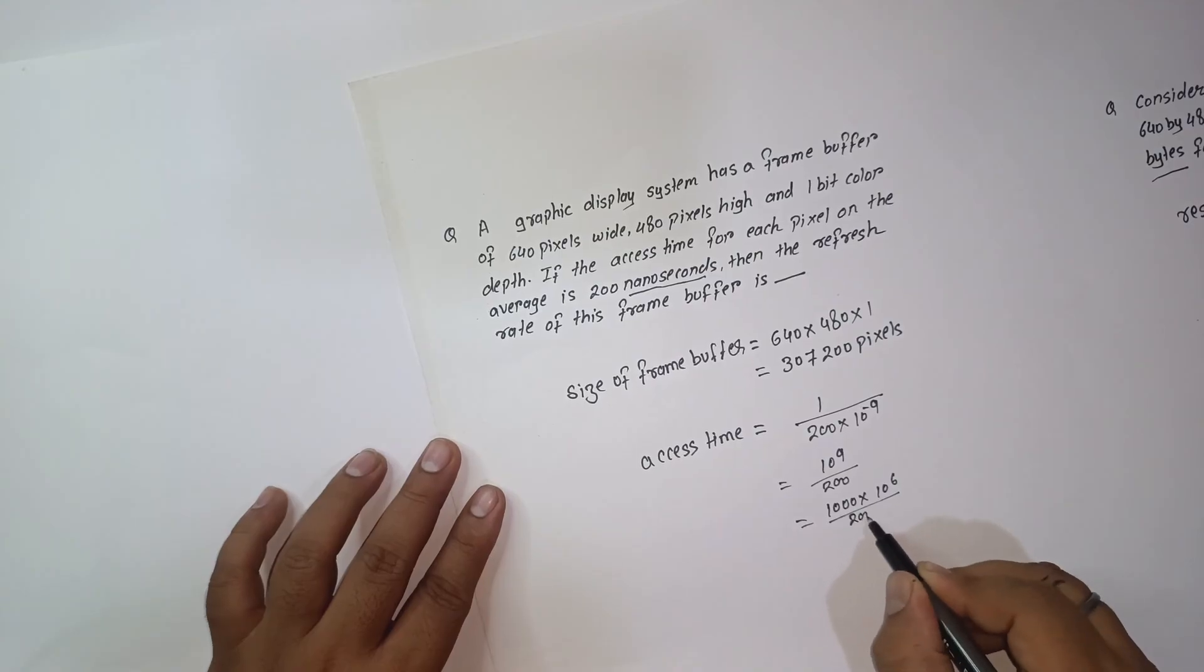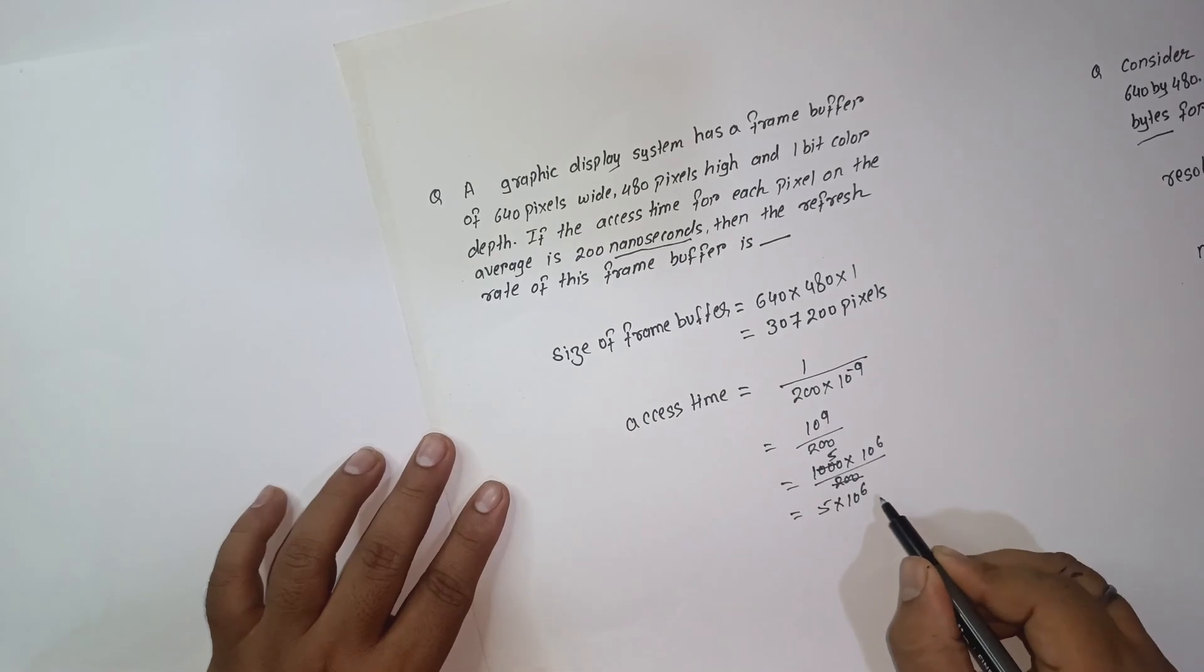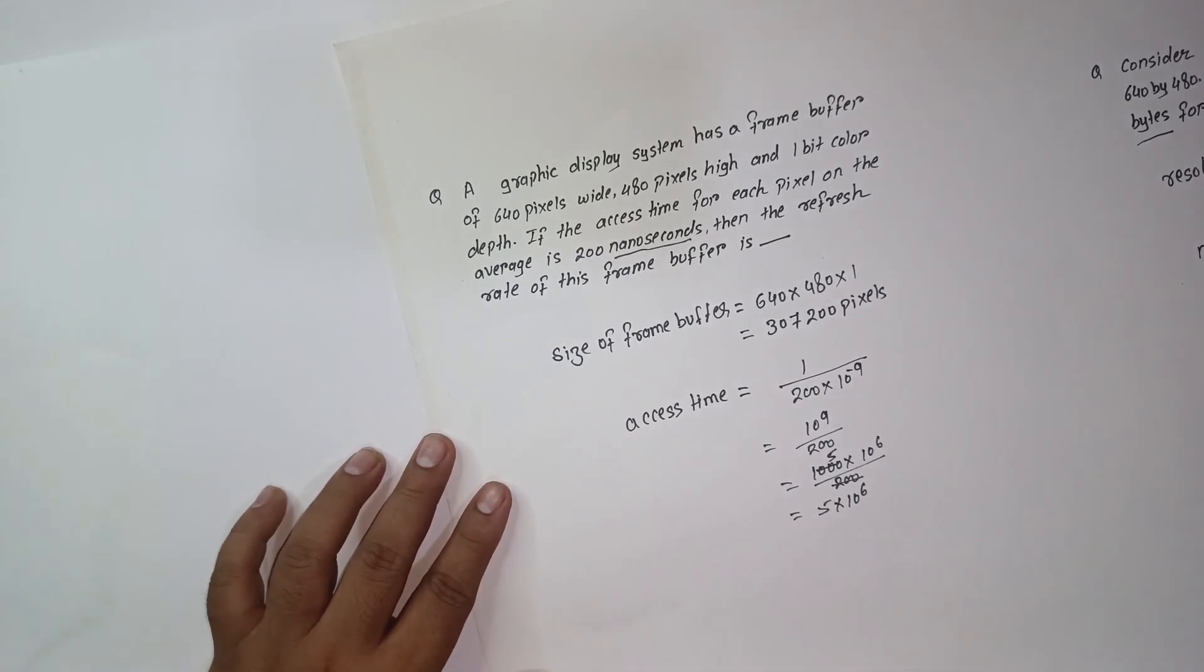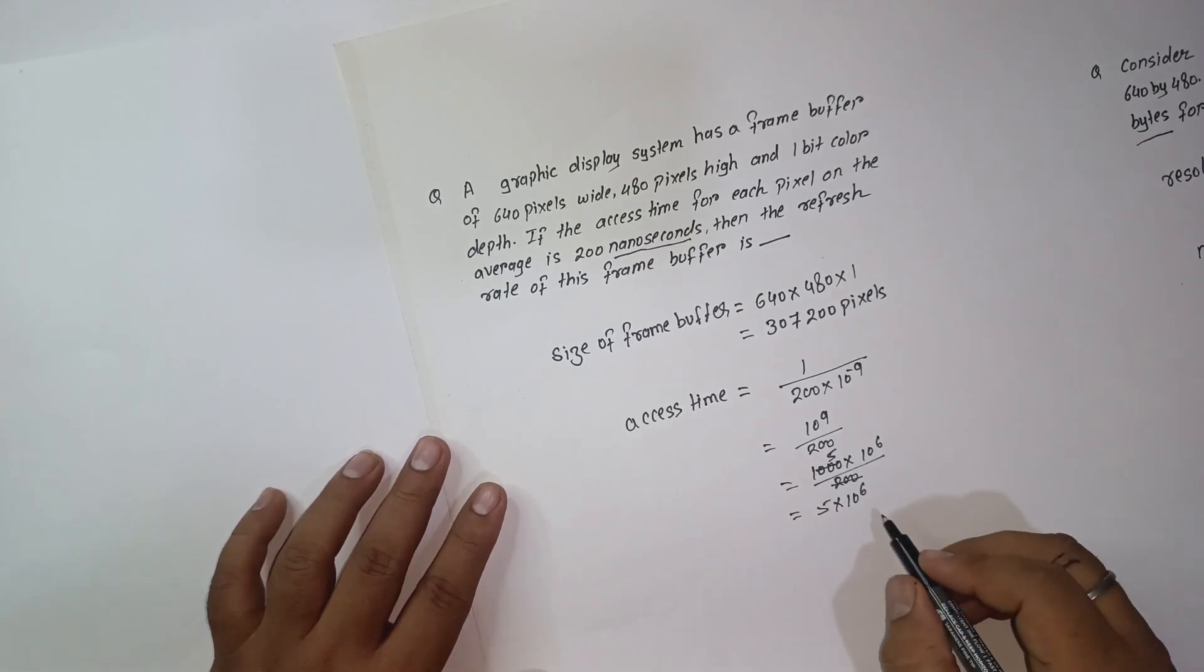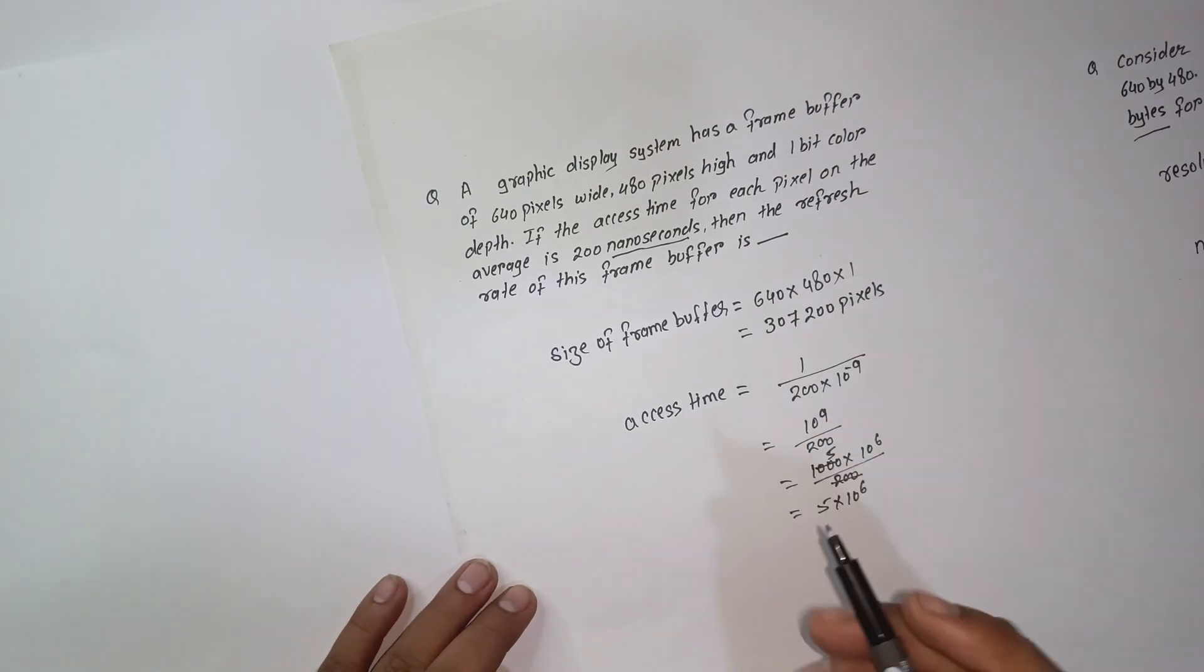10 raise to 6 by 200. So 100 cancels, 5 into 10 raise to 6. So we have calculated the access time. Now they have asked the refresh rate.